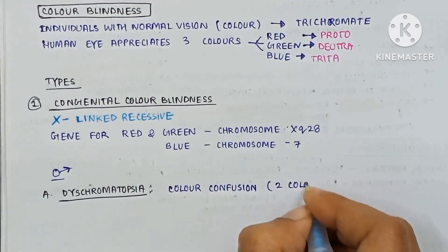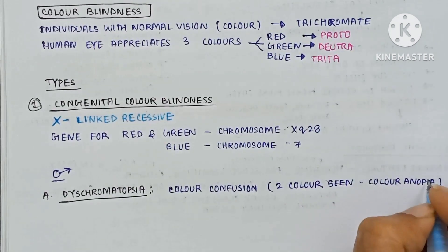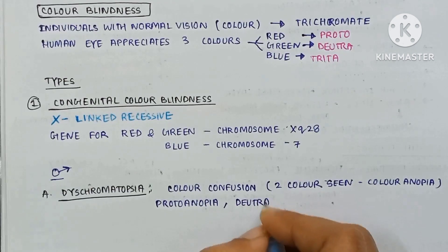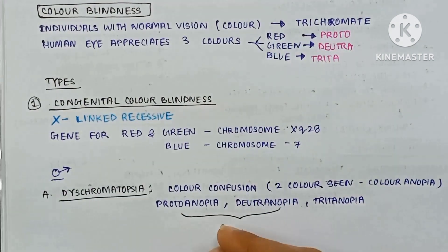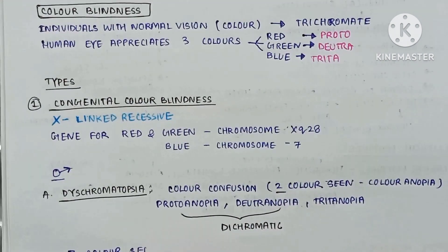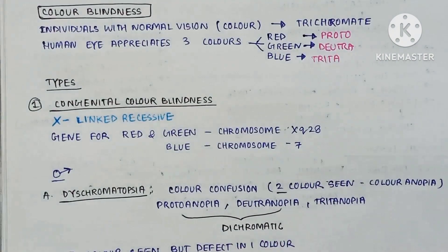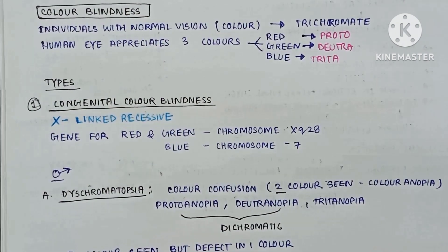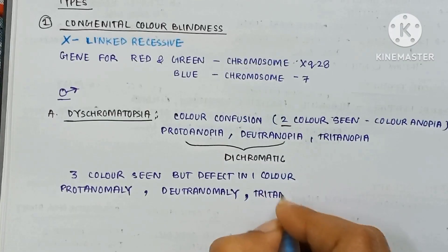In two-color vision — color anopia — the types are protanopia, deuteranopia, and tritanopia; these are known as dichromats. If three colors are seen but there is a defect in one color, they are known as protanomaly, deuteranomaly, and tritanomaly; these are known as trichromats with anomalous color vision.